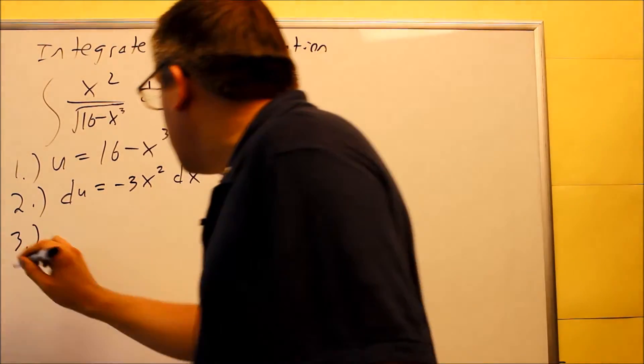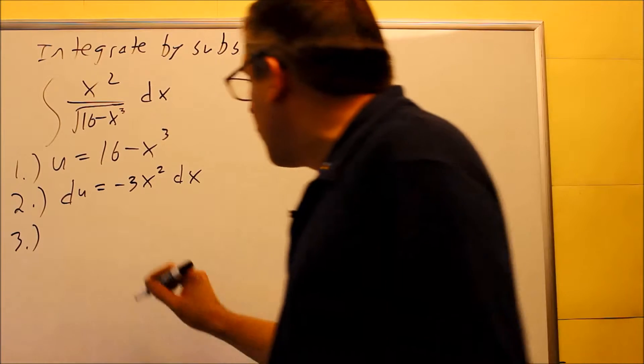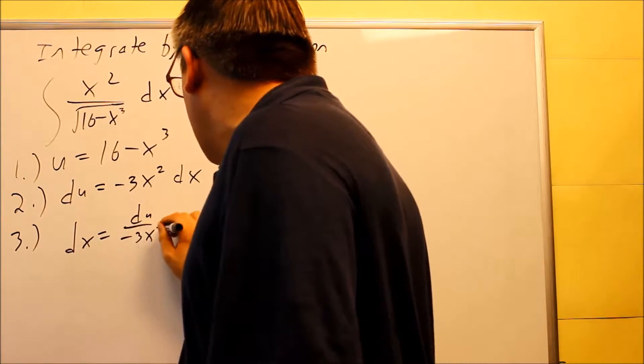For step number three, we need to solve for dx and substitute it back into our integral. So if we solve for this, your dx is equal to du over negative three x squared.